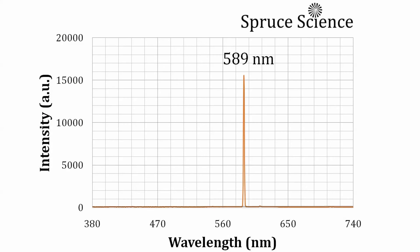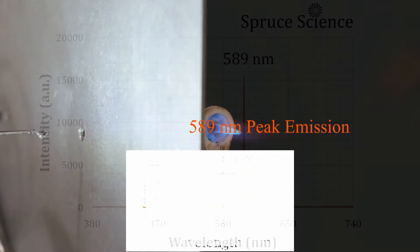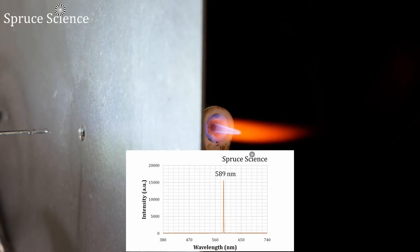The spectrum that's in front of you shows light intensity on the y-axis and wavelength on the x-axis. The peak emission is at 589 nanometers, and that is the bright yellow light that you see.